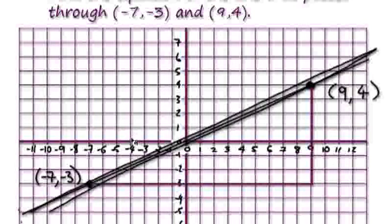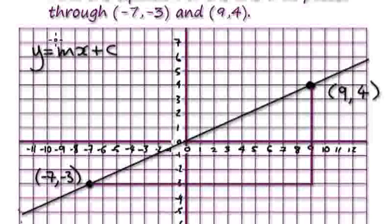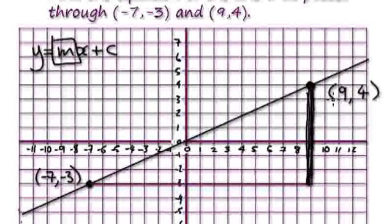The minute you see a straight line, you've got to write down y = mx + c. Now to find the gradient, you would need to work out this height here. You see this height is really easy to find once you've drawn the graph.